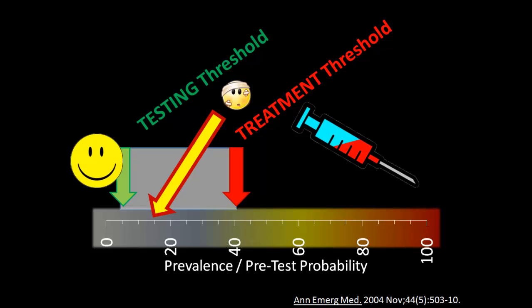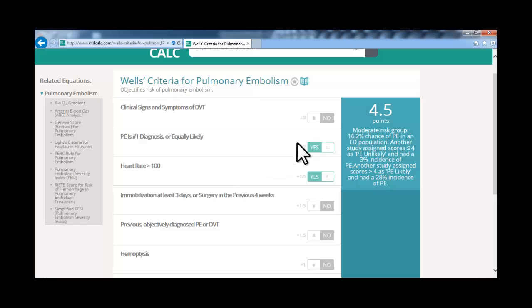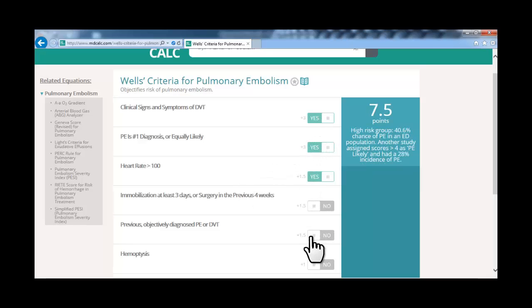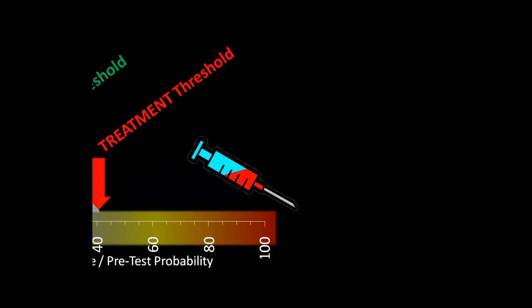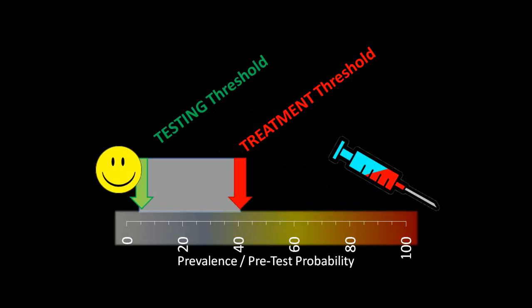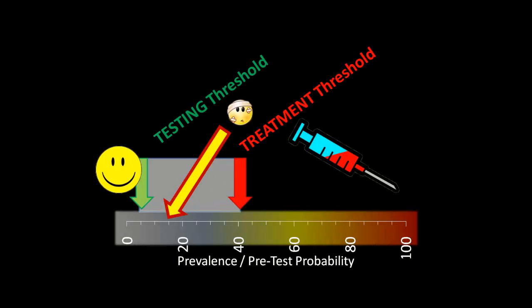Let's go back for a second. What if Bob told us that he had had leg swelling and had had recent orthopedic surgery? Well, now Bob's pretest probability is 45 or 50 percent, and so Bob should go ahead and get treated. We don't need any more tests before treating him to decide if he has a DVT or a pulmonary embolism. Luckily for Bob — but unfortunately for us — we're still in the gray area.